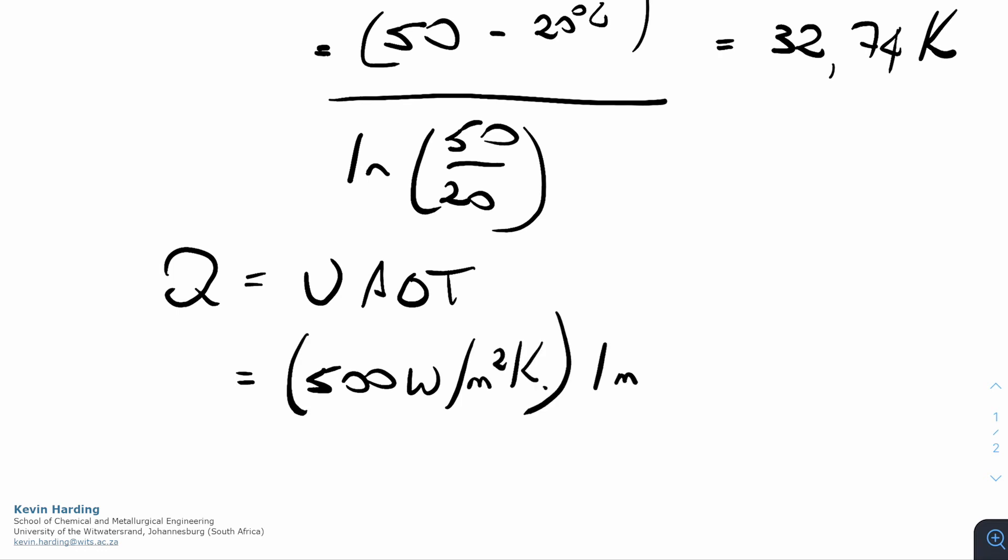and the question said for a 1 meter squared pipe, or heat exchanger rather, multiplied by delta T log mean of 32.74. The final answer for Q, multiply all those values together, should give you 16.37 kilowatts.